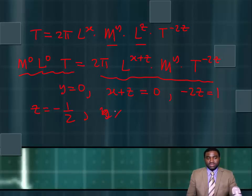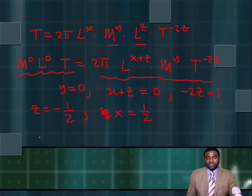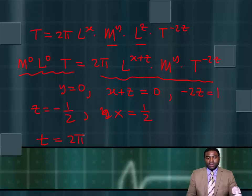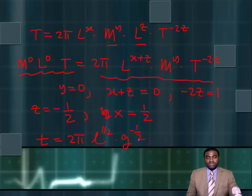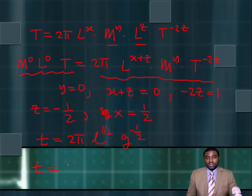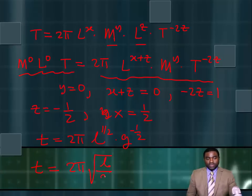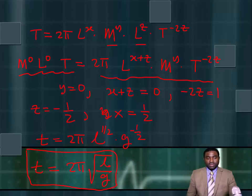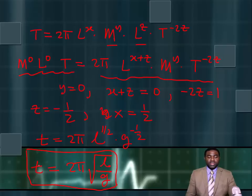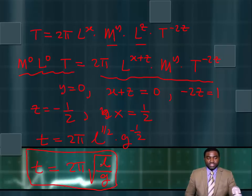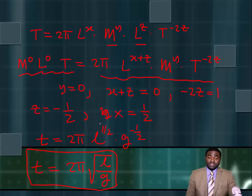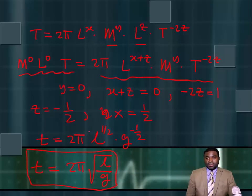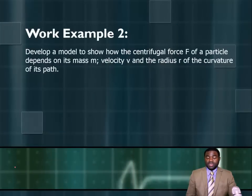Therefore, Z equals negative one-half, and X equals one-half. The period T will be equal to 2π times L raised to the power one-half, multiplied by G raised to the power negative one-half. Therefore, the period of a swinging pendulum is equal to 2π times the square root of L over G. Using dimensional analysis, we have derived an expression showing how the period depends on length and acceleration due to gravity — amazingly, it is independent of the mass of the object.